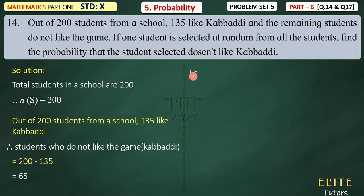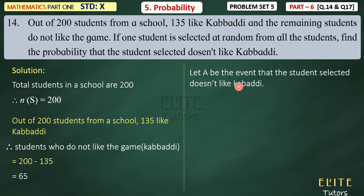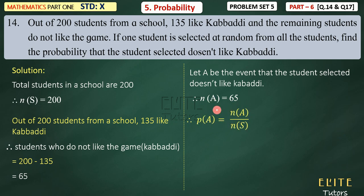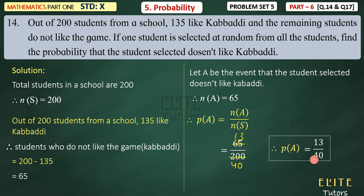We will assume: let A be the event that the student selected doesn't like a buddy. How many people don't like it? 65. So N(A) = 65, because the total is 200 and those who don't play buddy is 65. Now find the probability: P(A) = N(A) / N(S) = 65 / 200 = 13/40. Therefore P(A) = 13/40.